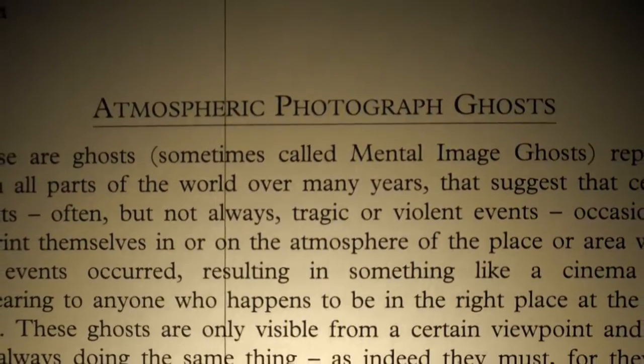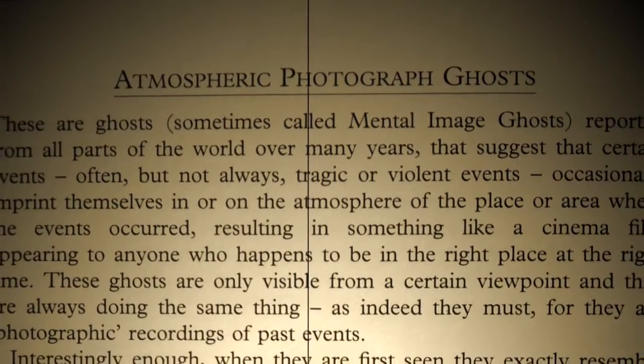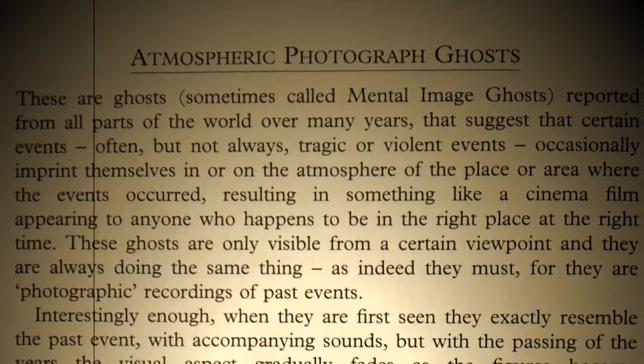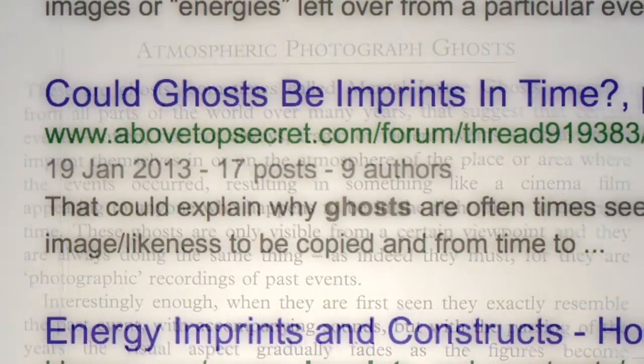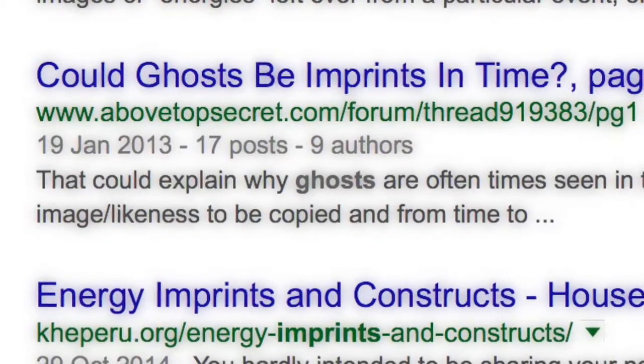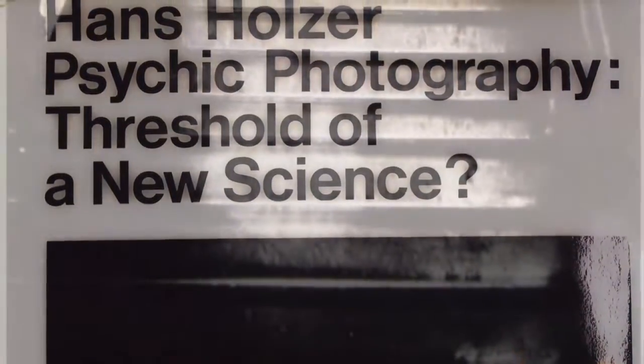Category number two: atmospheric photographic ghosts, also called mental image ghosts. Events can imprint themselves in the atmosphere of a place — it's sort of like getting a suntan, where the environment picks up emotional energy and gets imprints from events that have occurred. What's interesting is these ghosts are only visible from a certain viewpoint, and they're always doing the same thing. They are photographic recordings of past events, like watching an old film playing, and often accompanied by sound. Over the years the image can fade away and the sound remains, until eventually, like a battery running out, the sound too disappears.